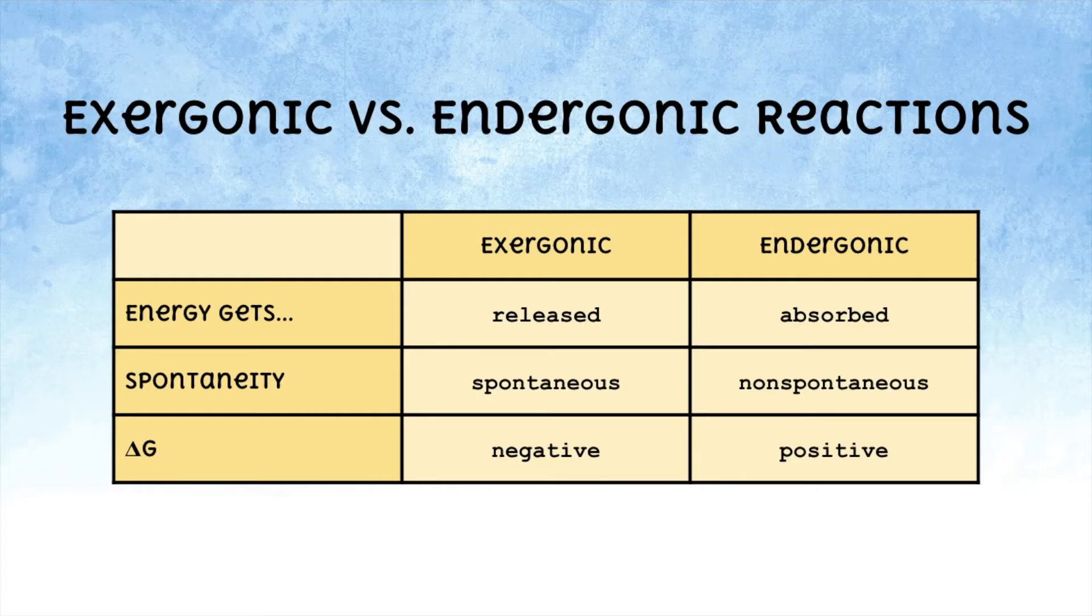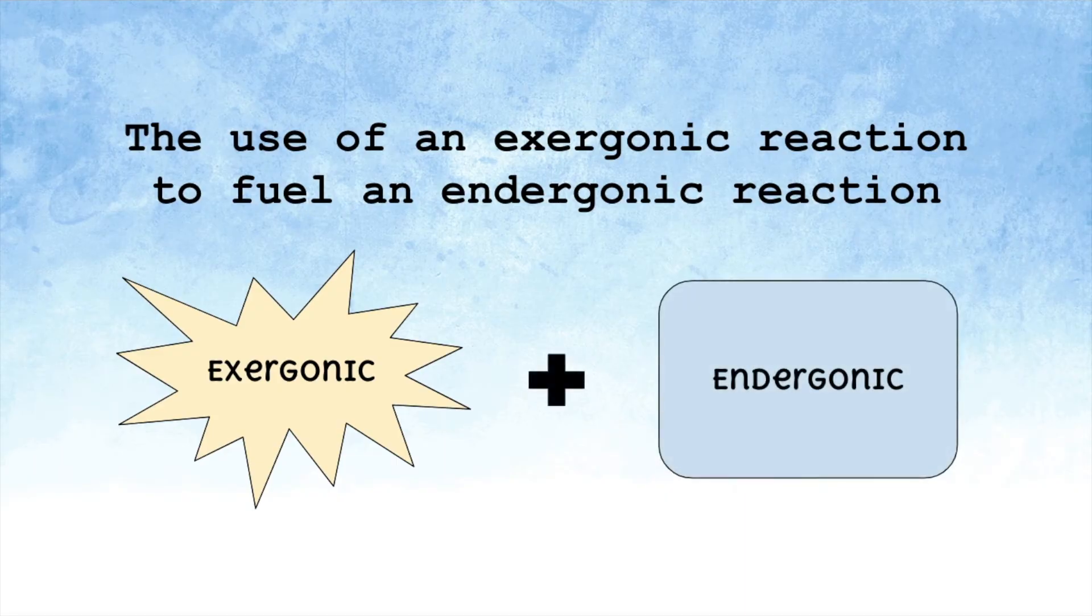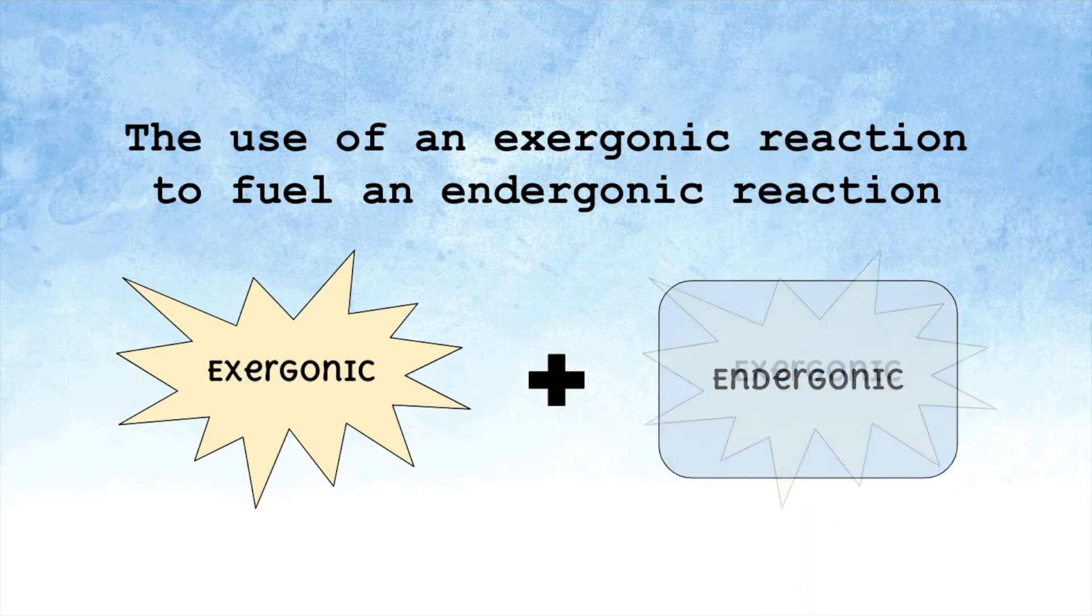By showing the differences between exergonic and endergonic reactions, the textbook definition of energy coupling begins to make more sense. Because an exergonic reaction releases energy and can occur on its own, while an endergonic reaction can't. Pairing an exergonic reaction with an endergonic can give the non-spontaneous reaction the boost of energy it needs to occur on its own.